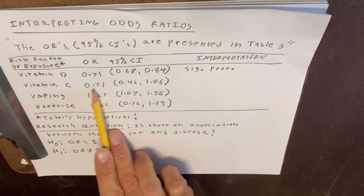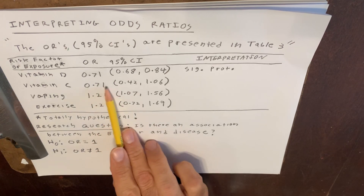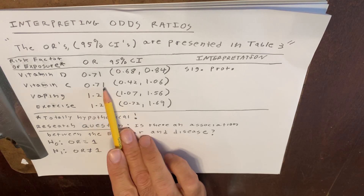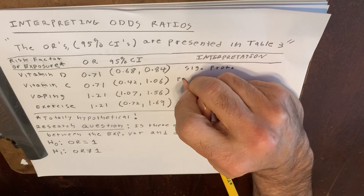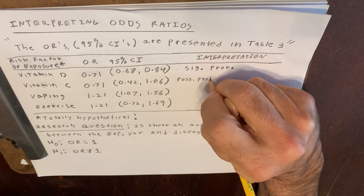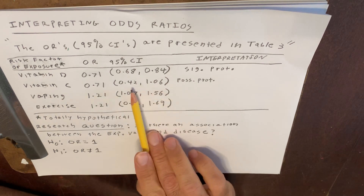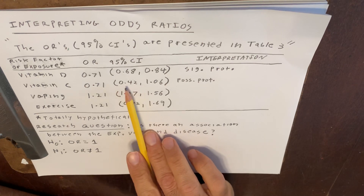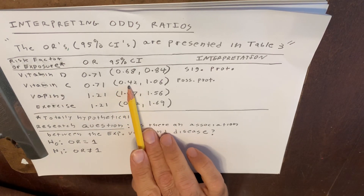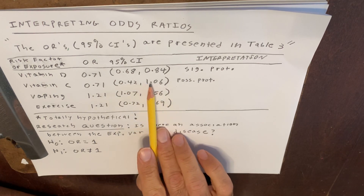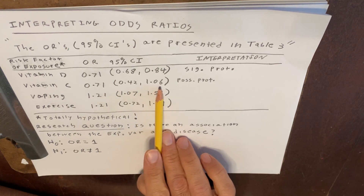Let's look at vitamin C by contrast. I purposely wrote this to have the same exact odds ratio point estimate, because I didn't want you to think that the point estimate is what's driving statistical significance — though it is what drives the idea of possible protection. The point estimate is less than 1, but you're going to be disappointed when you look at the confidence interval bounds. The lower bound is 0.42 — vitamin C seems protective, this bound is less than 1. But the upper bound is greater than 1.